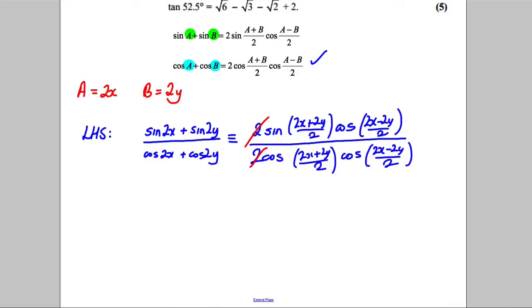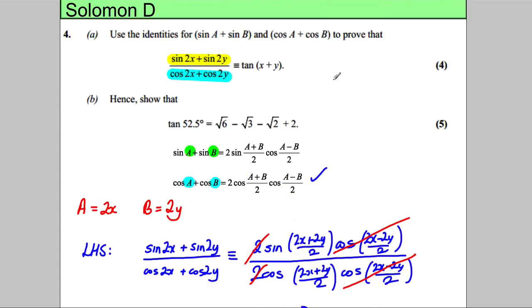You could also note that cos of X subtract Y would cancel with this cos of X subtract Y. So what would we be left with? We'd be left with sine of X plus Y divided by cosine of X plus Y, which by definition is tan of X plus Y. And that's exactly what we were asked to show in the original question.